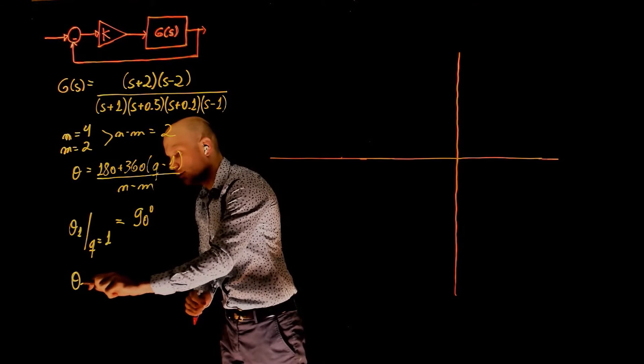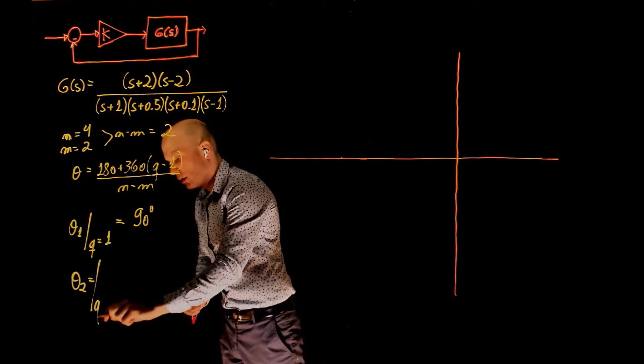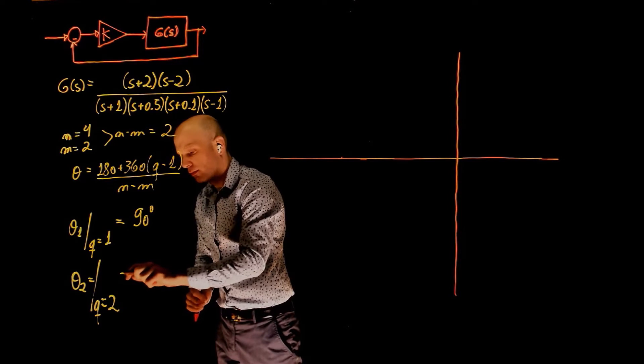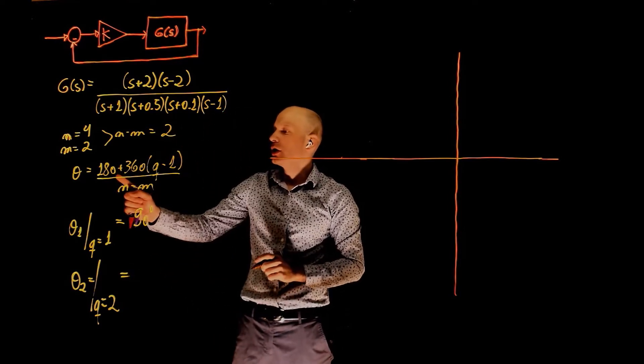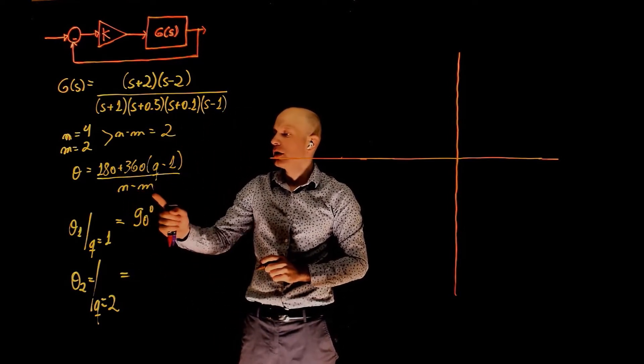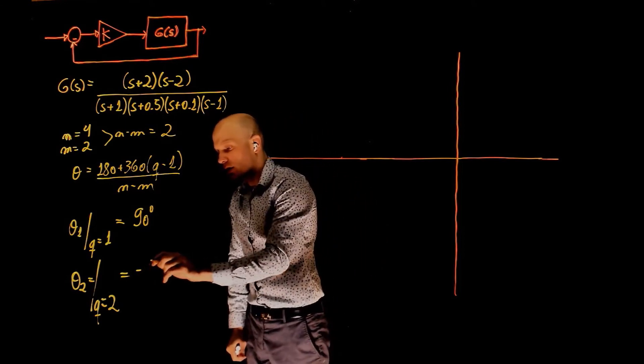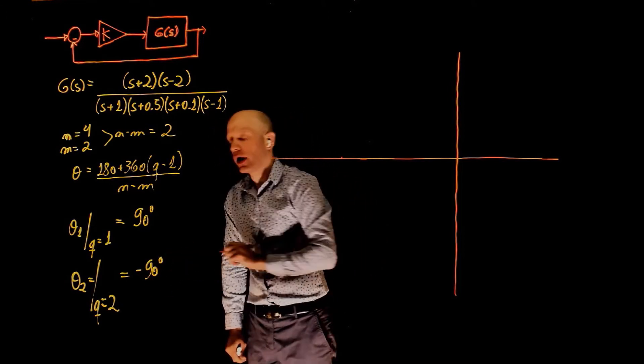And theta 2 is obtained when q is equal to 2. That is 180 plus 360 times 1 divided by 2, that's 270 degrees, which is the same as negative 90 degrees.